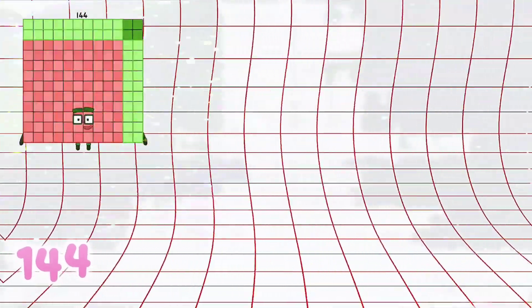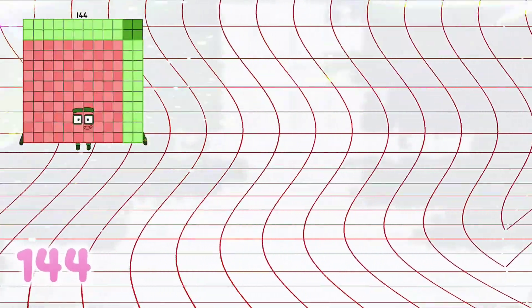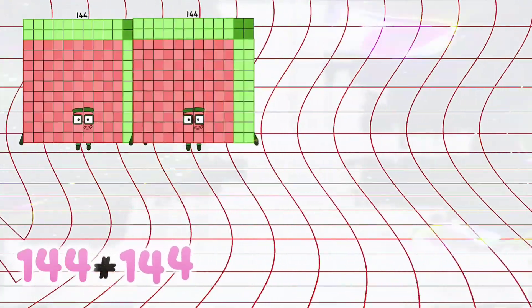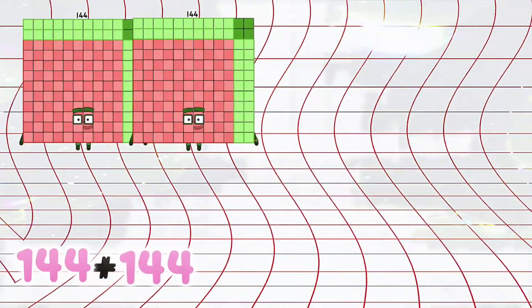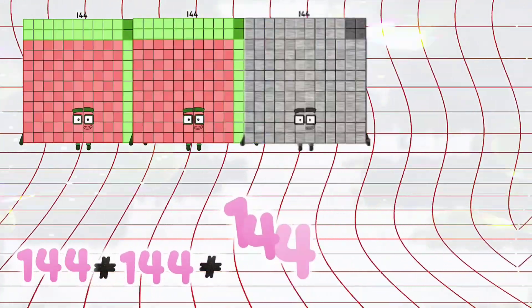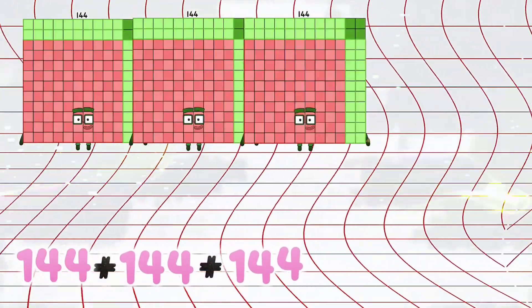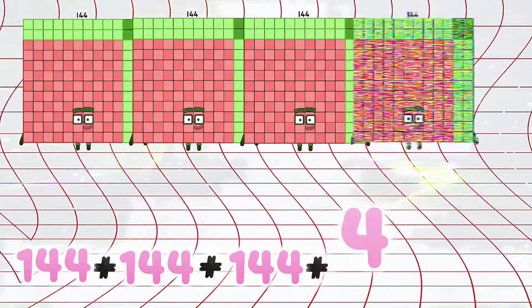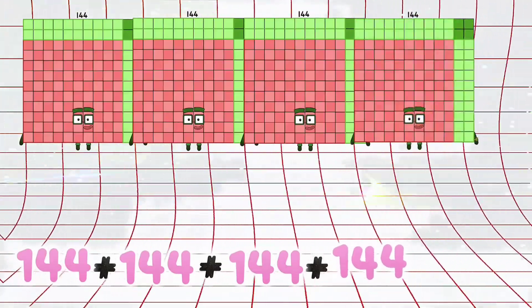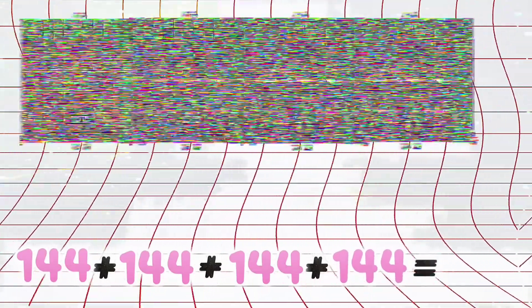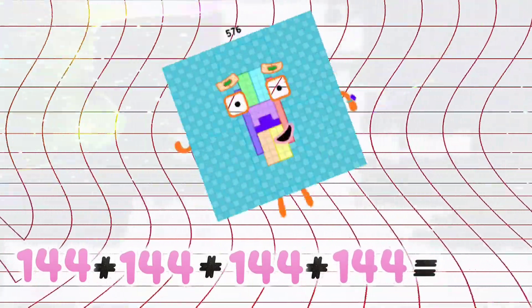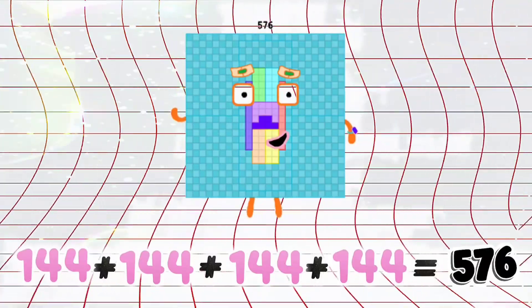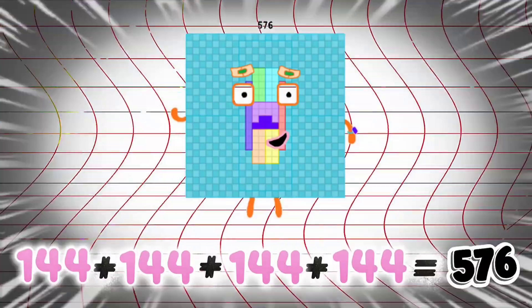144 plus 144 plus 144 plus 144 is equals to 576.